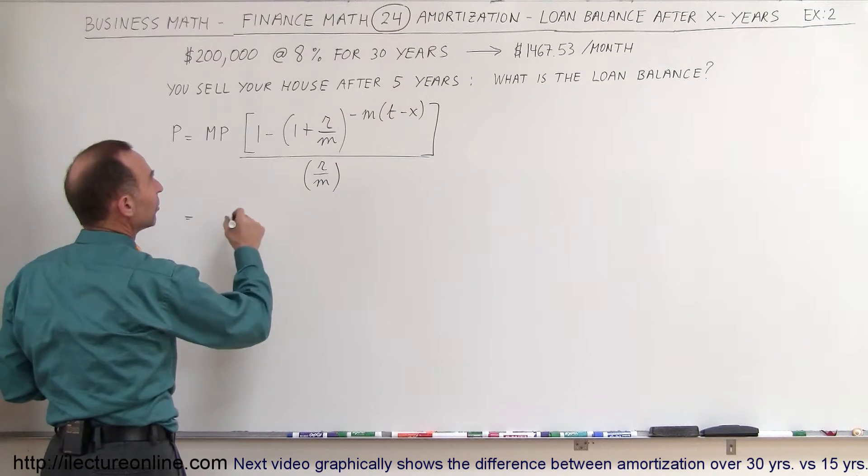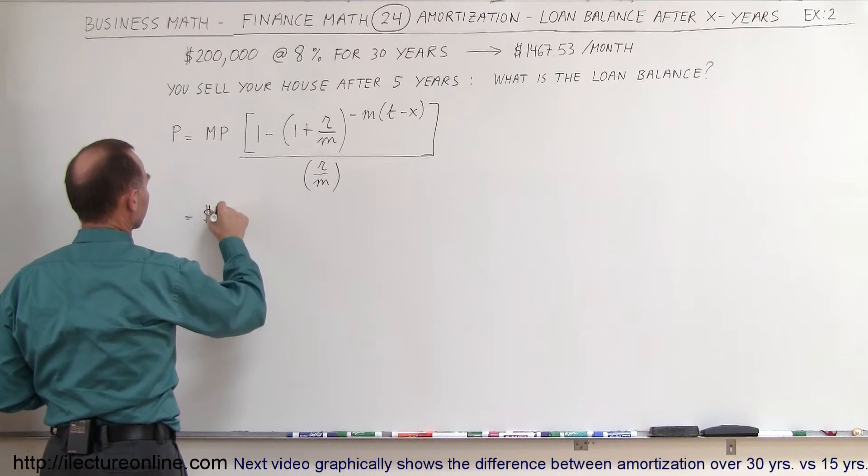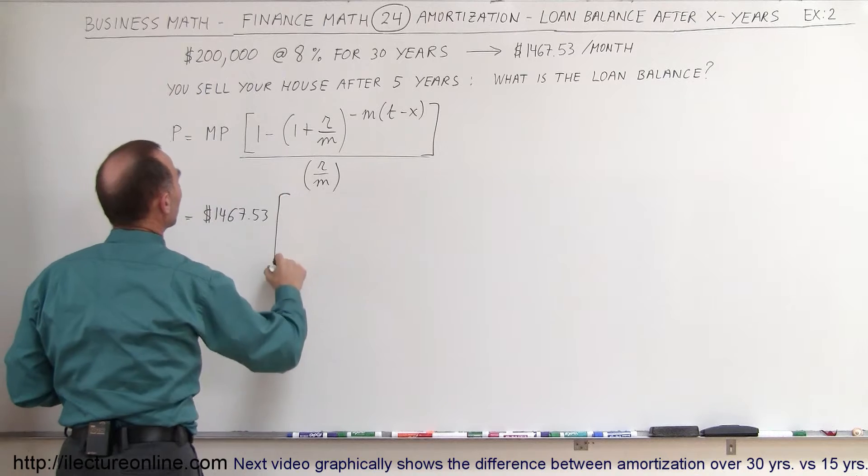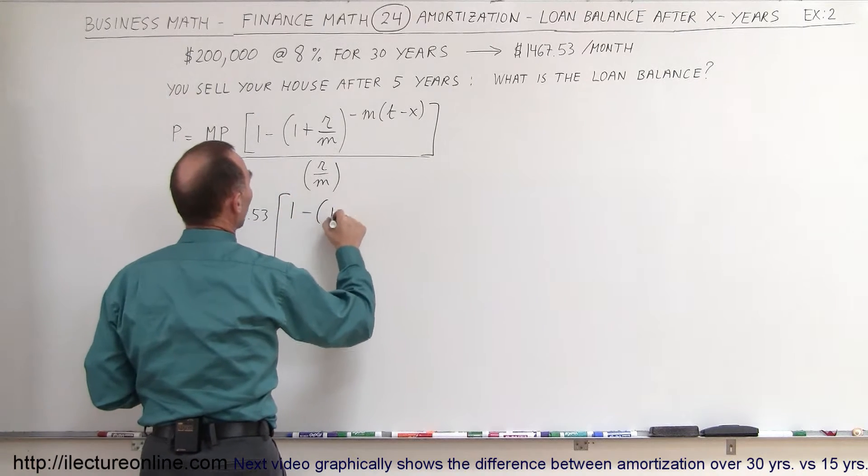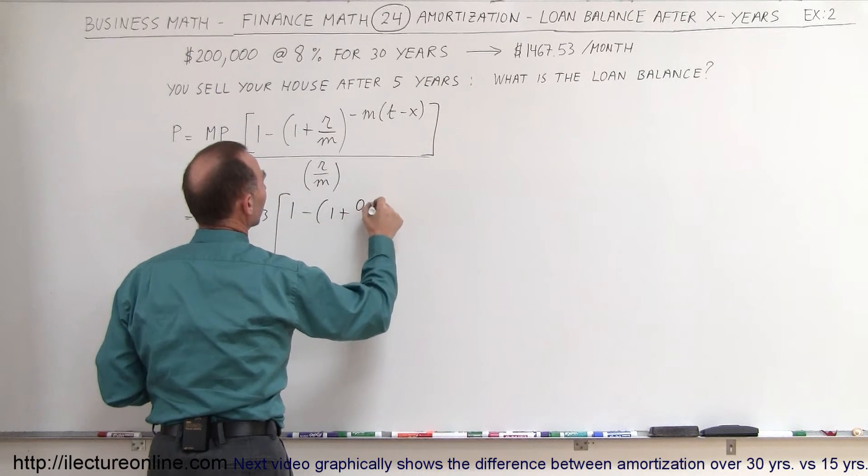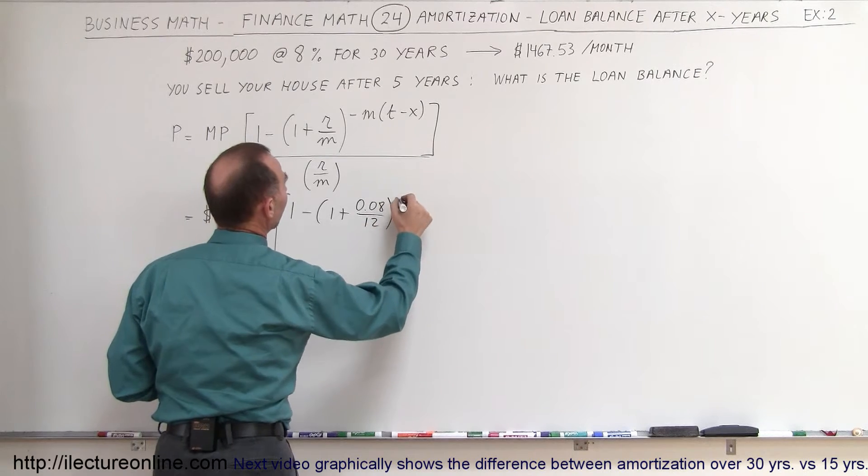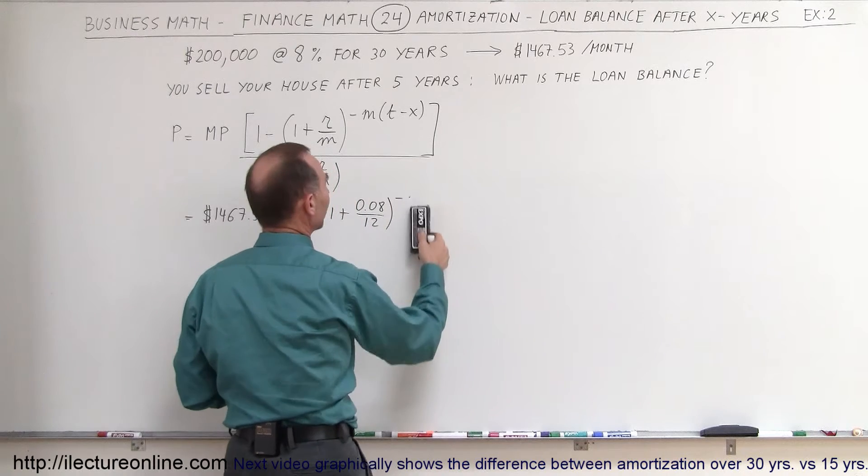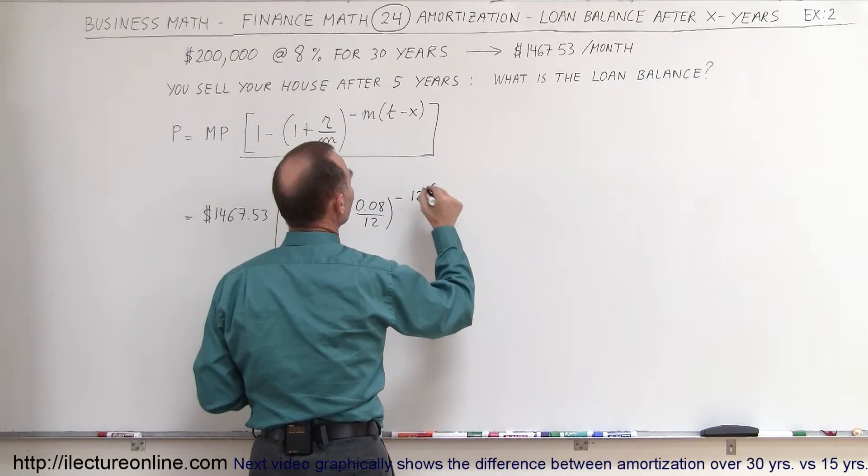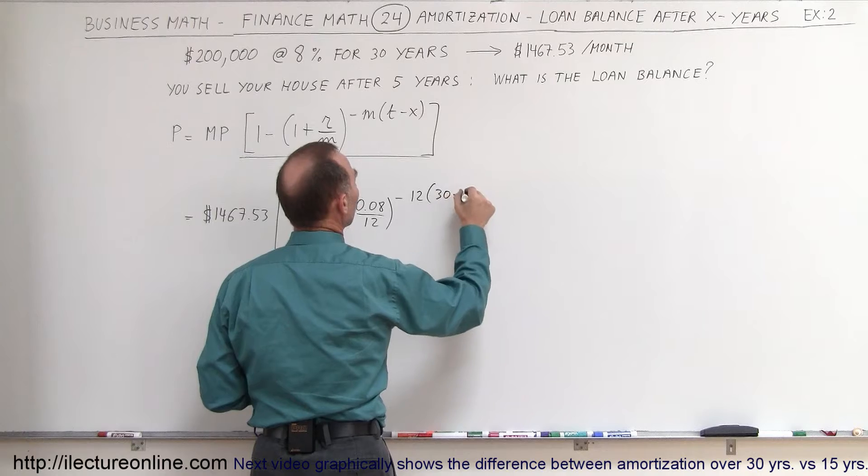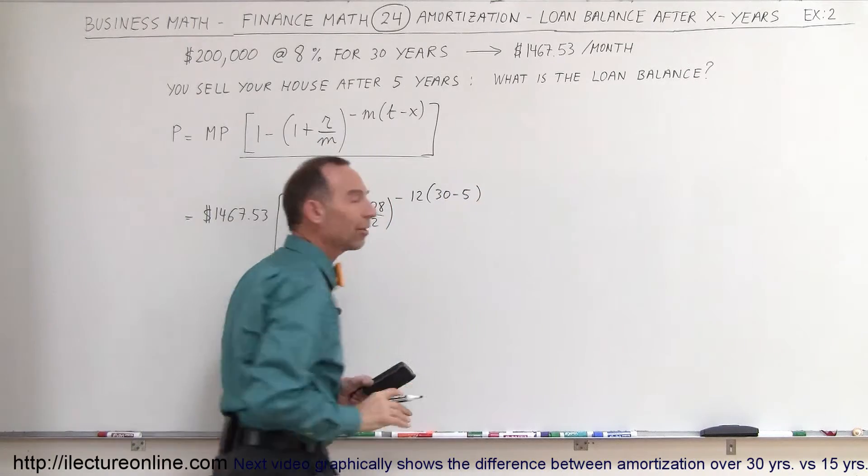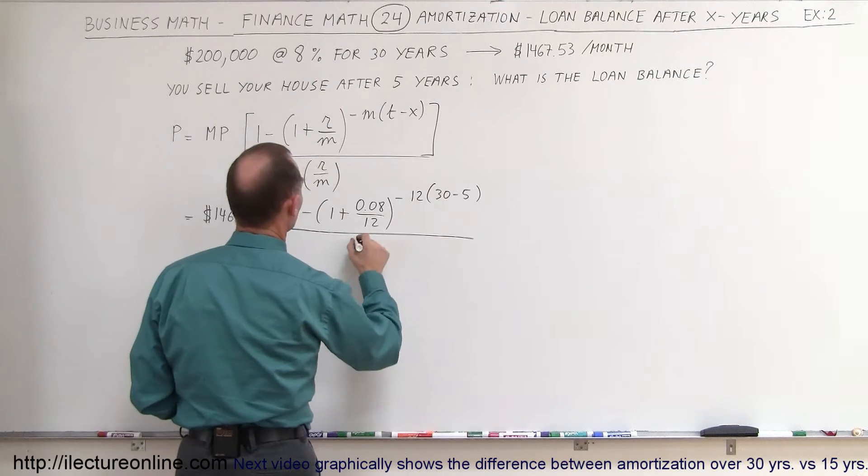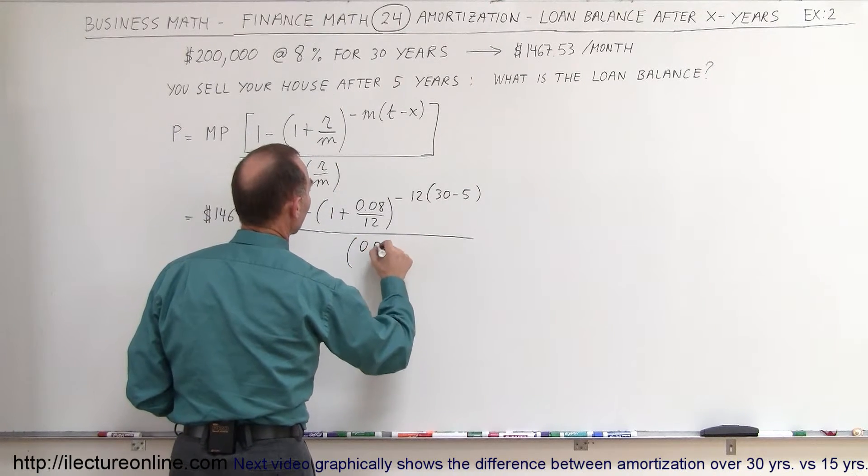So in this case, the monthly payments would be $1,467.53. We multiply that times 1 minus (1 plus the rate divided by the number of payments per year) raised to minus M. I keep writing M, but I want to write 12 instead because M is equal to 12 times the time, that's a 30-year loan, minus the five years that are already passed. So X represents the number of years that have passed. And we divide that by the rate, 0.08 divided by 12.